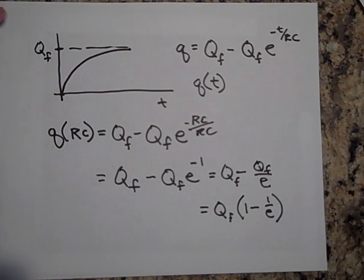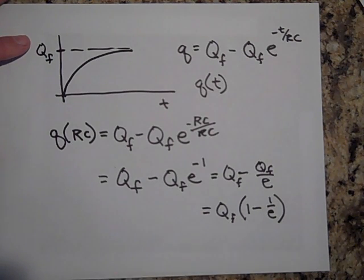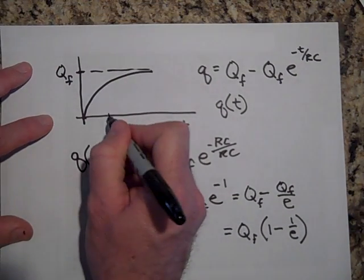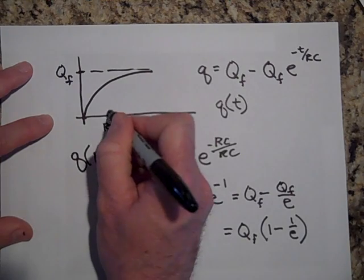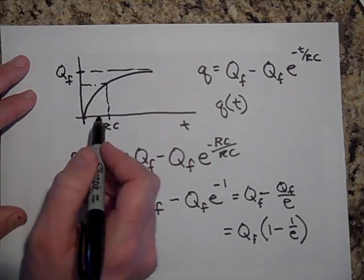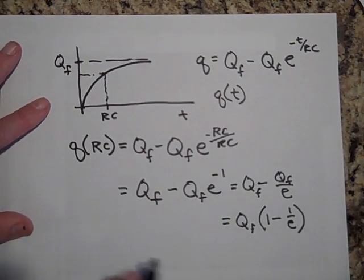So what that means is that after one time constant, it will take two thirds of the time to get, excuse me, after one time constant, so go over here to one time constant. If you go up and over, that is going to be two thirds of your final charge.